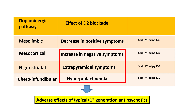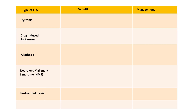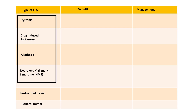Regarding extrapyramidal symptoms, there are various forms that can be produced by D2 receptor blockers or first-generation antipsychotic agents. They include dystonia, drug-induced Parkinson's disease, akathisia, neuroleptic malignant syndrome, tardive dyskinesia, and perioral tremors. Dystonia, drug-induced Parkinsonism, akathisia, and neuroleptic malignant syndrome occur very soon after administration of a typical antipsychotic. Tardive dyskinesia and perioral tremors are adverse effects that are delayed in onset.